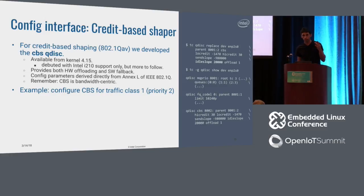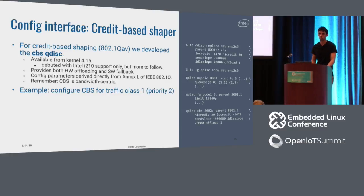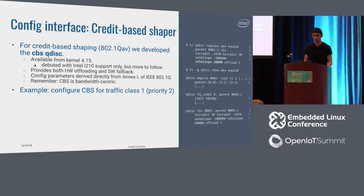The next step in the breakout was: now that we've exposed the transmission queues, we have to install the traffic shapers on each queue. For the credit-based shaper, there was nothing upstream, so we designed a new Qdisc called CBS. It was merged recently — I think December or November — and it's part of kernel 4.15 already. As part of the patch set, we provide support for the I210 driver. The CBS Qdisc provides hardware offload — you can offload the work completely to the controller if it has support — or you can use a software fallback for controllers without credit-based shaper support.